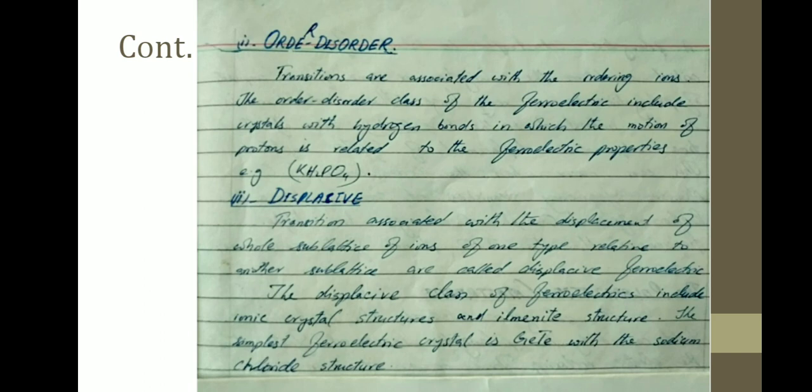Displacive: transitions associated with the displacement of the whole sublattices of ions of one type relative to other sublattices are called displacive ferroelectrics. The displacive class of ferroelectrics include ionic crystals with perovskite structures and ilmenite structures. The simplest ferroelectric crystal is GeTe with the sodium chloride structure.